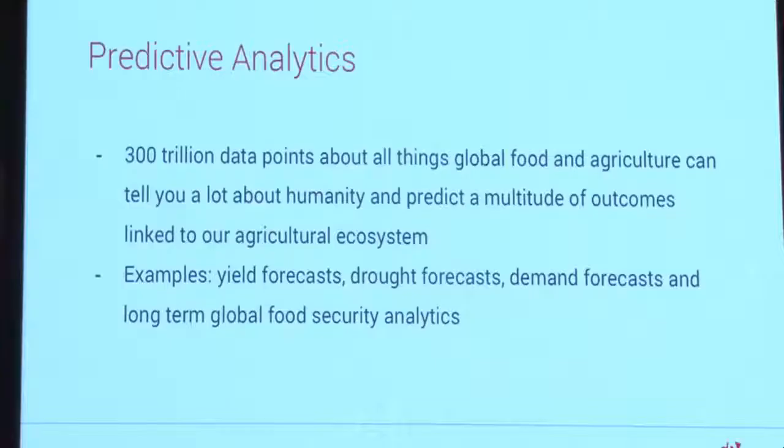For example, you can forecast yields at very localized levels, forecast drought, forecast demand, or do really long-term food security analytics in a way that wasn't possible before. You can connect dots between countries, between crops. That's really what AI is about — finding uncommon relationships versus using only the things we know in a very tightly defined process.